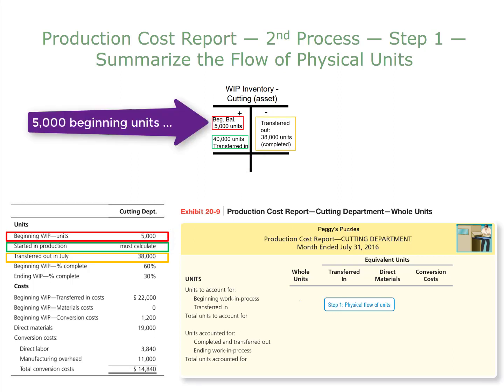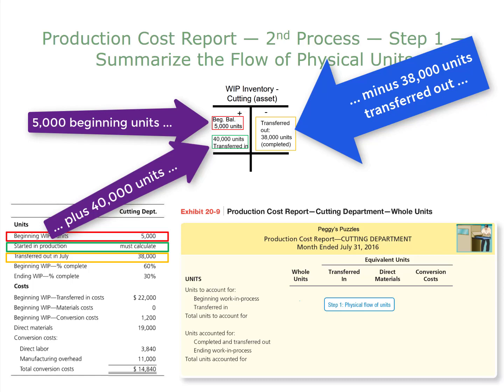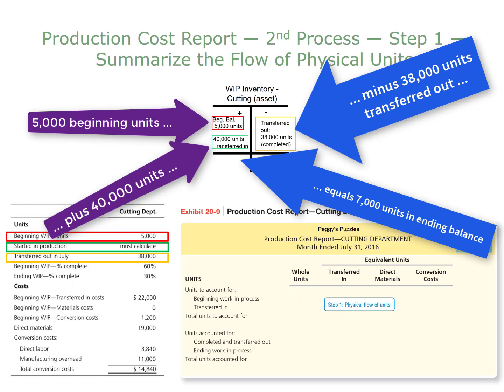Mathematically, we had a beginning balance of 5,000 units, plus 40,000 units transferred in, minus 38,000 units transferred out. So 5,000 plus 40,000, minus 38,000 units, gives us 7,000 units in the ending balance.